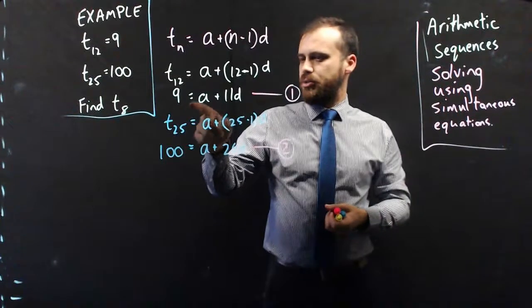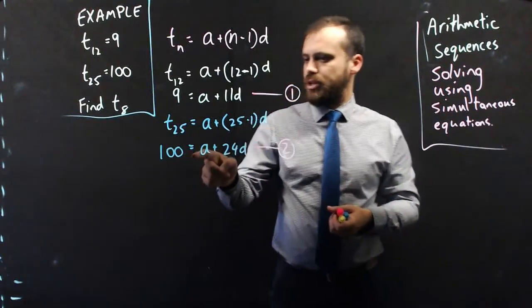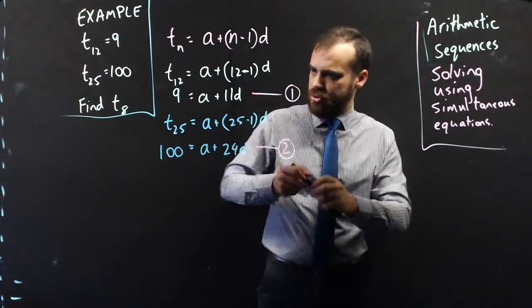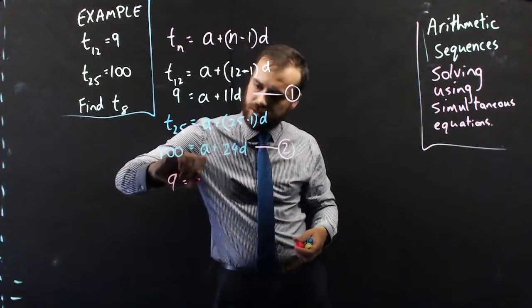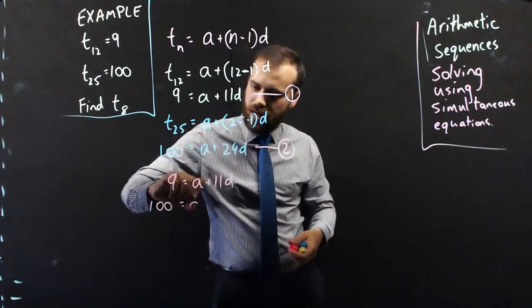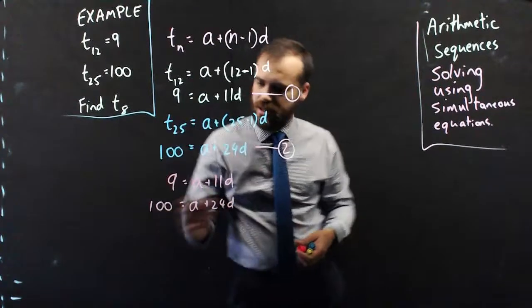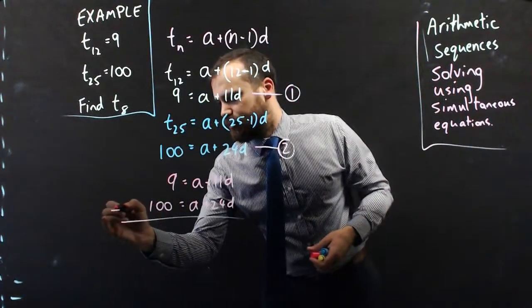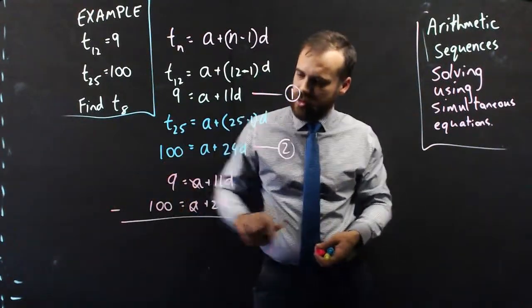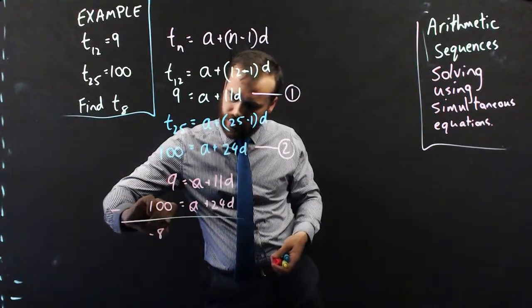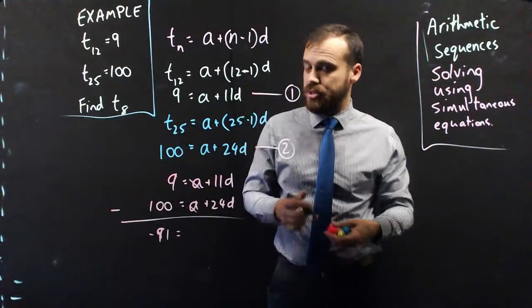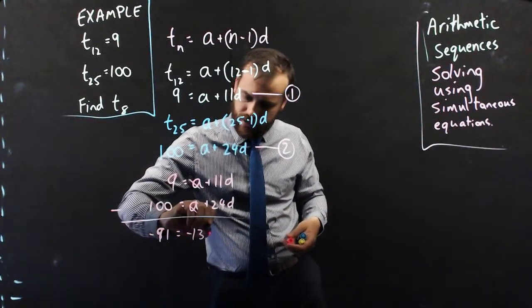So, 9 equals a plus 11d. 100 equals a plus 24d. They're really nicely set up because if I subtract one of those equations from the other, the a's will cancel out. 9 minus 100 is minus 91. And 11 minus 24d is minus 13d.